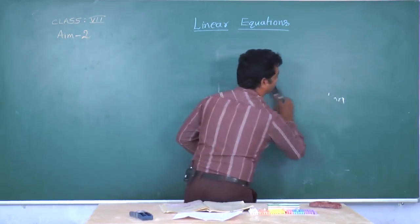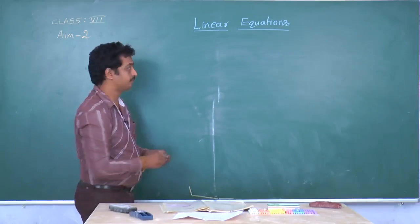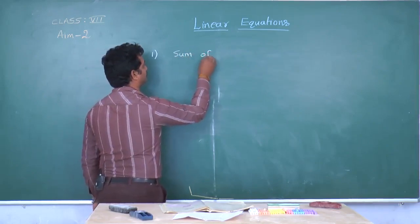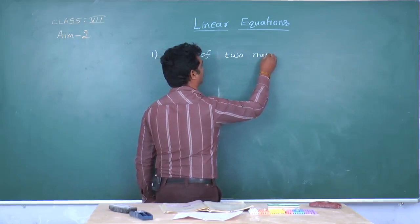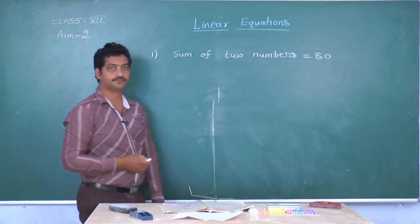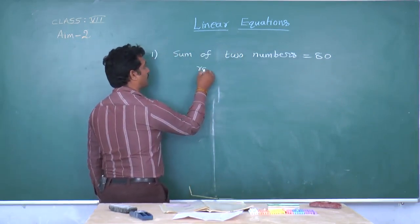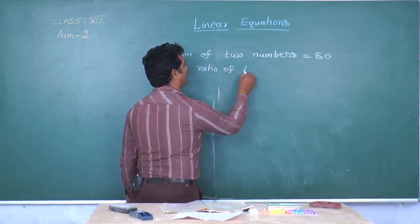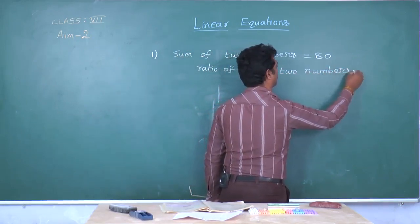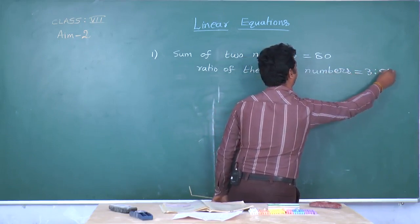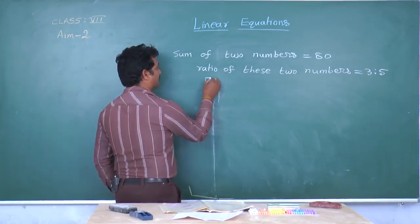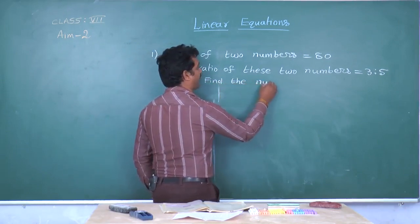Now let us see the first problem. Given that the sum of two numbers is equal to 80, and the ratio of these two numbers is equal to 3:5. Find the numbers.